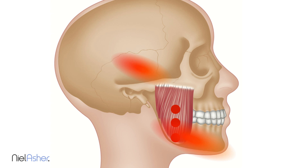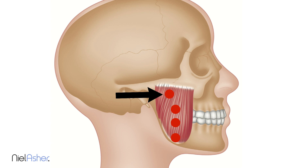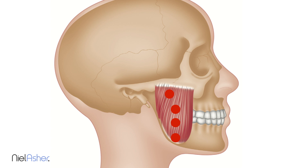The third trigger point refers pain into the jaw joint and oddly also upward, creating quite a complex referral pattern. Finally, the deep portion of the masseter muscle may have a trigger point high up which refers pain into the ear. So the masseter muscle has a complex referral pain pattern — it is a mimicker, mimicking both tooth pain and ear pain.